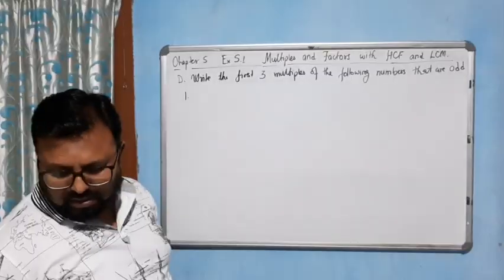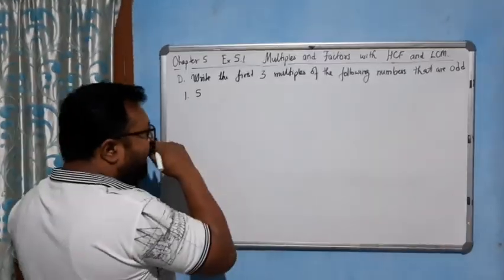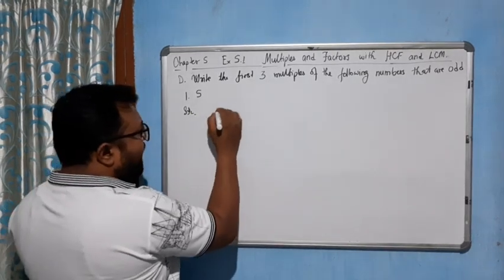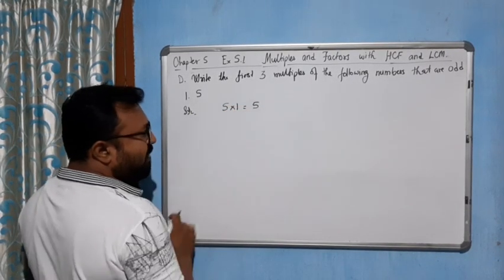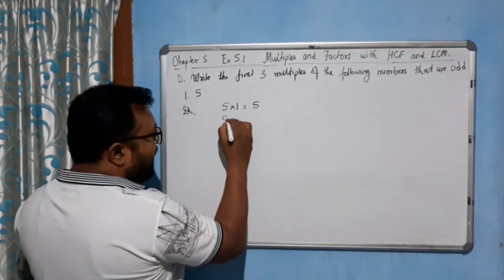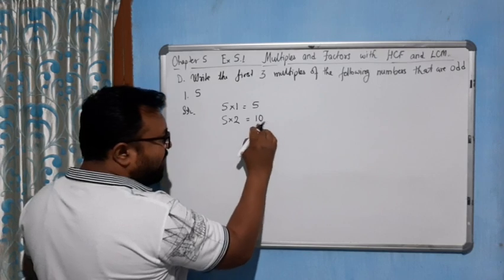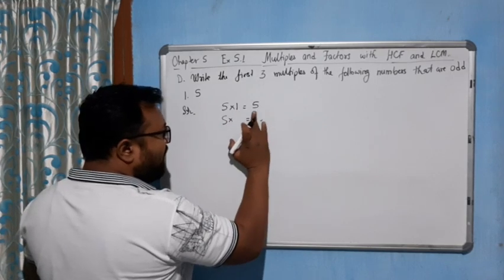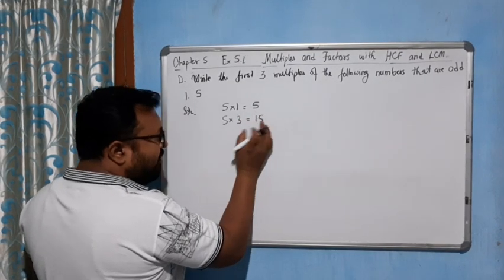The first one is 5. Look at here in this case. If we multiply 5 into 1 gives you 5, so 5 is an odd number. Now 5 into 2 gives you 10, so 10 is an even number. So we will not take this number, we will move to the next number.